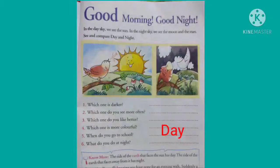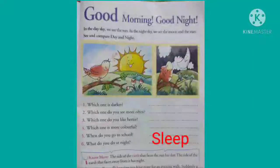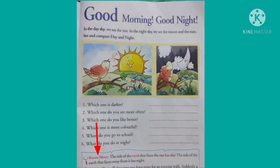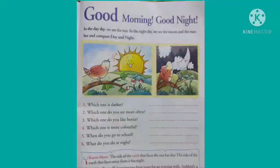6th number: What do you do at night? Children, what do we do at night? We all sleep. So here write the answer: sleep. Now come to the next section. The side of the earth that faces the sun has day. The side of the earth that faces away from it has night.